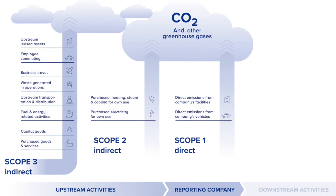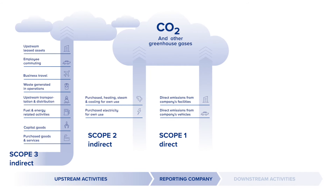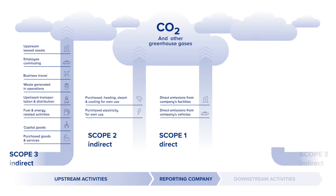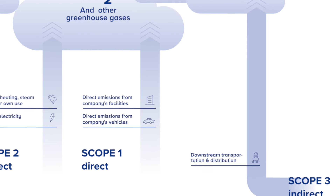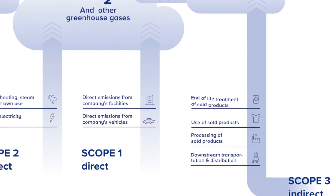Downstream emissions are related to sold goods and services and are emitted after they leave the company's ownership or control. Downstream emissions fall under seven categories, including downstream transportation and distribution, the processing and use of sold products, the end-of-life treatment, as well as the emissions of downstream leased assets, franchises, and investments.